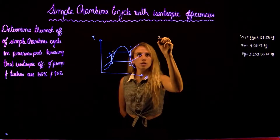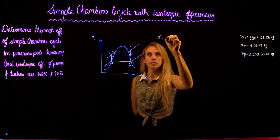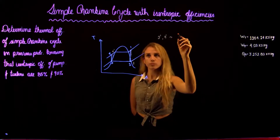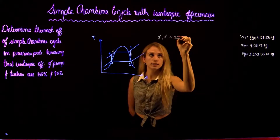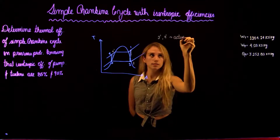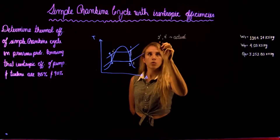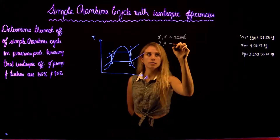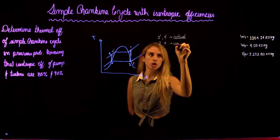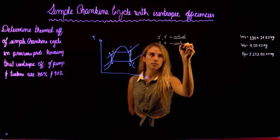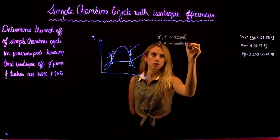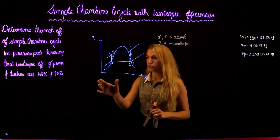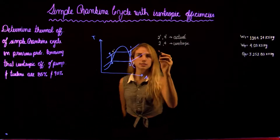However, in actual life, due to fluid friction and heat losses, we will have something like this. So 2' and 4' are the actual cases, while 2 and 4 are the isentropic cases, which assume there are no losses.